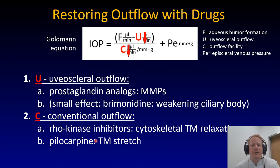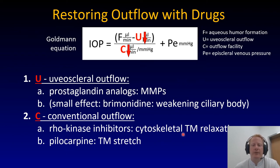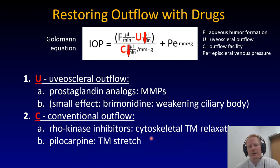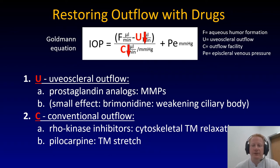Conventional outflow we can restore by using Rho kinase inhibitors, which relax the cytoskeleton of trabecular meshwork cells and change their behavior — their migration, their phagocytosis. So these are not just on-off, very quick switches, but they are lasting. Pilocarpine stretches the trabecular meshwork, so there you're restoring that component. That is a little shorter-lived perhaps, but it's restoring.